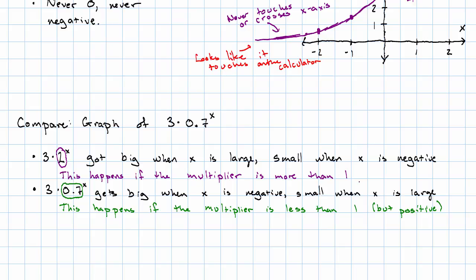If the multiplier is more than one, we expect a graph that gets big off to the right. If the multiplier is less than one, we expect a graph that gets big off to the left.